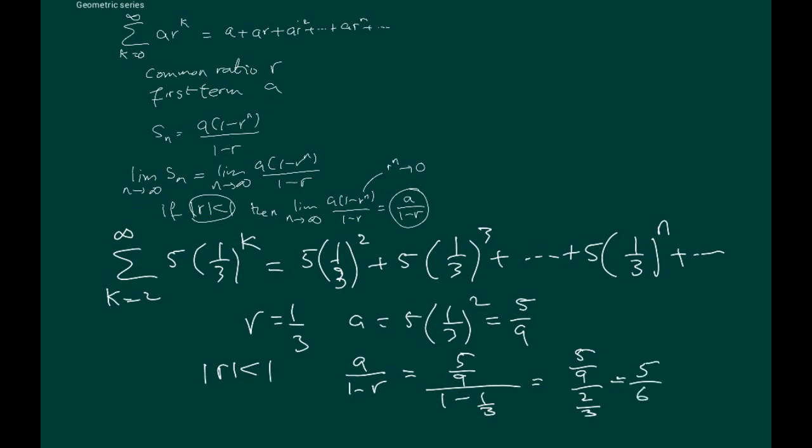Which gives us 5/9 divided by 2/3, equals 5/6 or 0.8333. So this is how a geometric series, given that its common ratio is less than 1, can be shown to be convergent. In fact we know that the sum converges to, for instance in this case, 5/6.